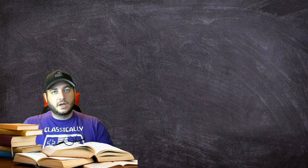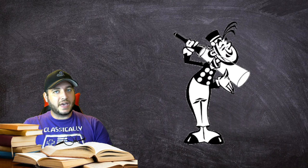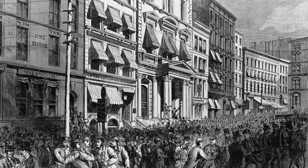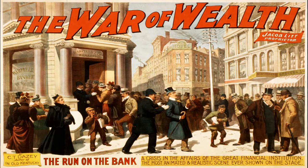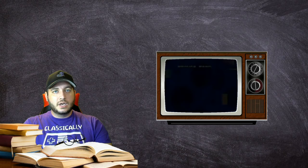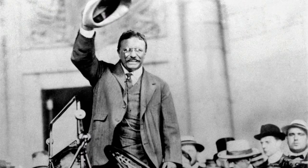A chain reaction of failed companies set off an economic depression unlike anything seen before in America. Banks soon followed suit, resulting in a stock market crash with ripple effects that left millions unemployed and homeless. This nearly five-year-long depression was a direct result of the rampant political corruption and blatant social inequality of the Gilded Age. As we'll learn in the next video, Americans' frustrations led to the election of Theodore Roosevelt and the beginning of the Progressive Era.